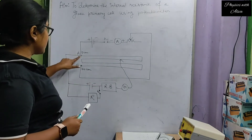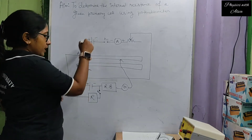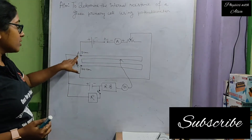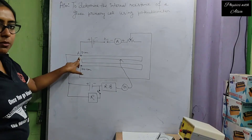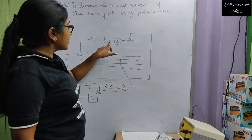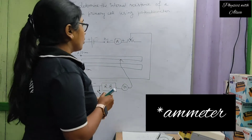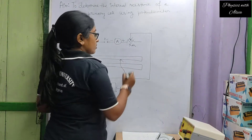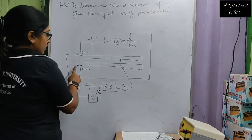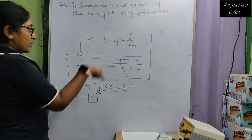This is the potentiometer; this is the starting point of the wire. The positive end of the main source is connected to the initial point of the potentiometer. The negative part of the battery is connected to a key K1, and the positive terminal of the battery is connected to a rheostat. The other end of the rheostat is connected to the last point of the potentiometer. This is one circuit.